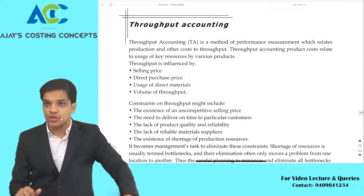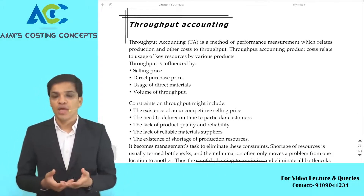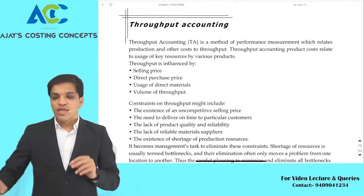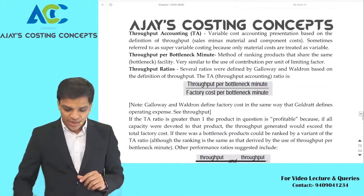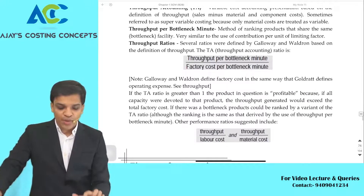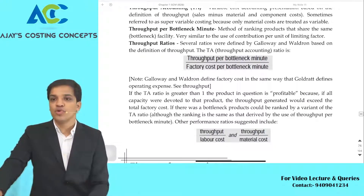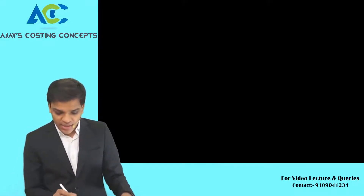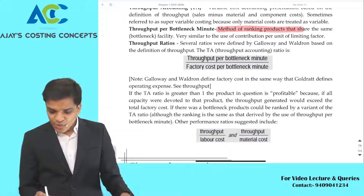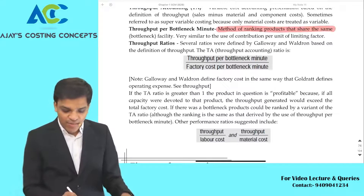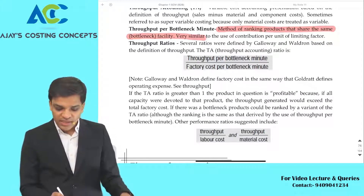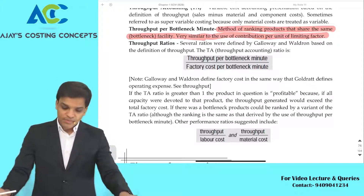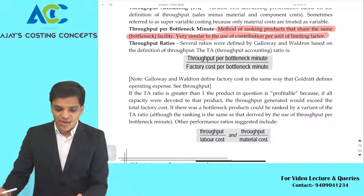Now it comes to throughput accounting. Throughput means output. Throughput accounting is output accounting. The throughput per bottleneck minute method is a method of ranking products that share the same bottleneck facility — very similar to the use of contribution per unit of limiting factor. In our example, we already did ranking: this would be first rank, this would be second rank — that ranking on the basis of bottleneck activity is done through throughput accounting.